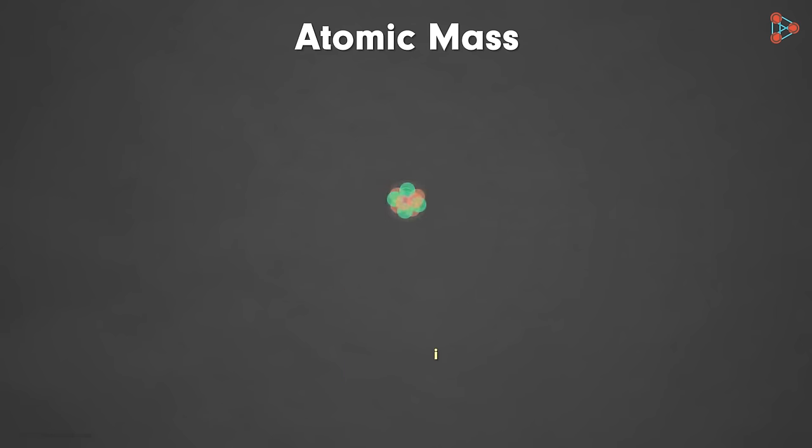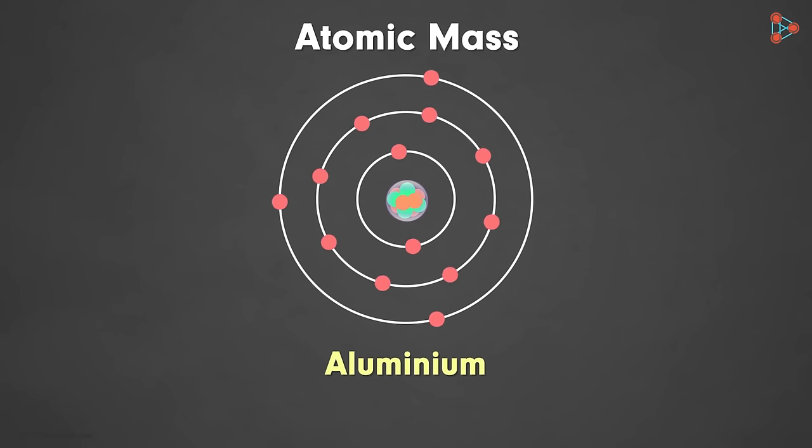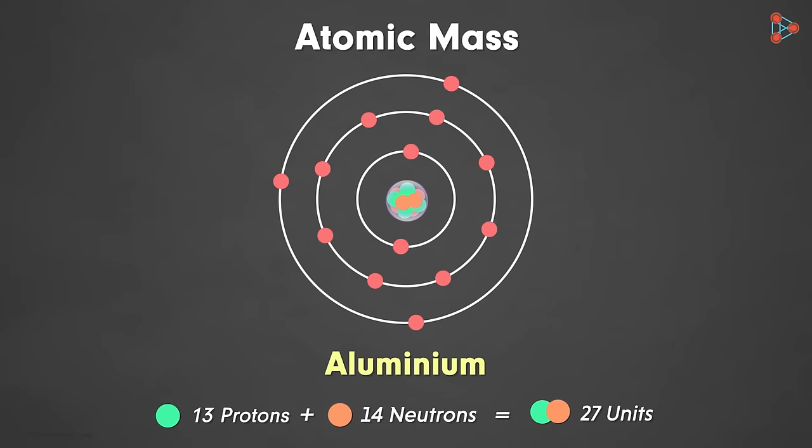Just like fluorine, even aluminium has an extra neutron compared to the number of protons. That is, in a single atom of aluminium, we have 13 protons and 14 neutrons. Summing up the two, we get 27 units which is the atomic mass of aluminium.